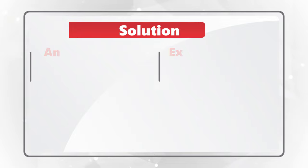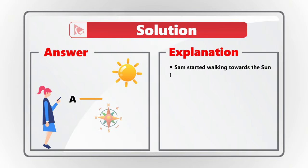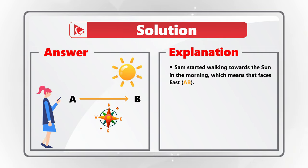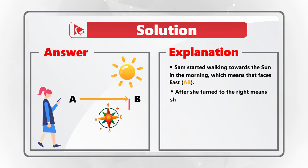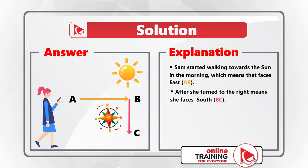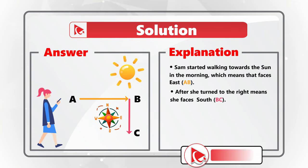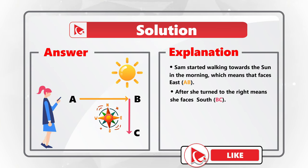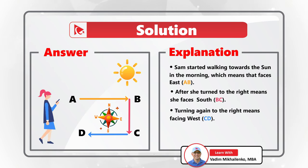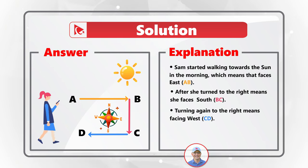Let's start from the beginning. When Sam started walking early morning and faces the sun, it means that she faces east, because the sun is rising in the east. After Sam turned to the right, she faces south now. If her first direction is shown by the ray AB, after she turns right it's shown by the ray BC. Turning again to the right means that now Sam is facing west, which is displayed by the ray CD.